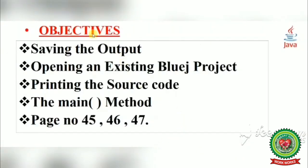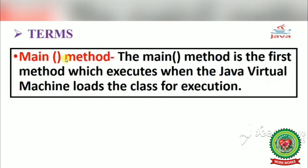Today we have discussed the objectives: saving the output, opening an existing BlueJ project, printing the source code, and the main method. The term we discussed is: main method. Students, revise all the step questions we have discussed. Revise the term, do the practical practice. In the next video we will come with the next pages.